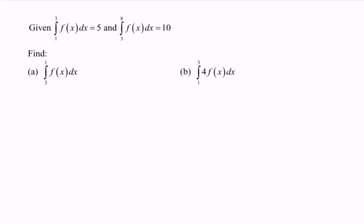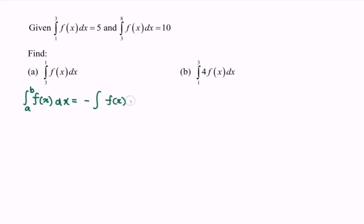Find part (a): integrate the function f(x) with respect to x for the limits 3 to 1. We refer to the properties of the definite integral — integrating f(x) from a to b is equal to negative of integrating f(x) from b to a, where we can interchange the limits.